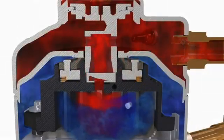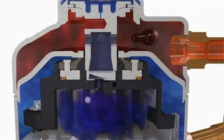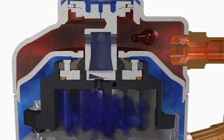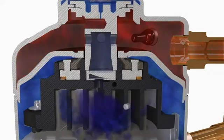The Copeland Scroll Digital Compressor alternates between compression and idling cycles by introducing a controlled internal pressure balance. This causes the stationary scroll to move axially. When moved away from the orbiting scroll, it effectively stops the compression cycle.